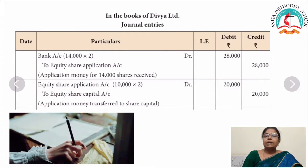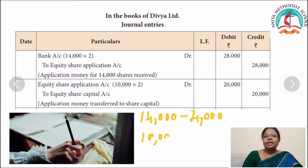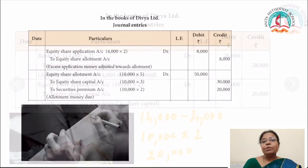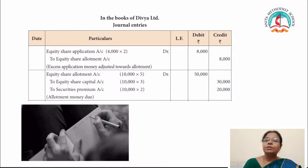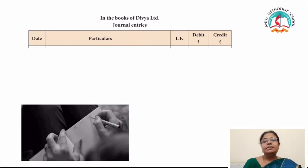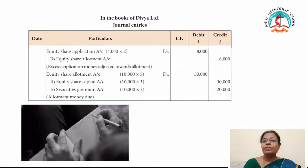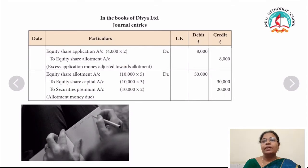Then it should be transferred to capital account. Actually the company needs only 10,000 equity shares, so there is an excess of 4,000 shares that has to be refunded. Equity share application account: 14,000 minus 4,000 = 10,000 at the rate of rupees 2, that is 20,000 — to equity share capital account. Application money transferred to share capital. In the problem it is given that excess application money should be adjusted to allotment. So equity share application account, excess 4,000 at the rate of 2, to equity share allotment — 8,000. Excess application money adjusted to allotment.